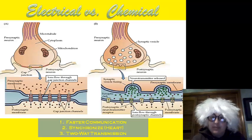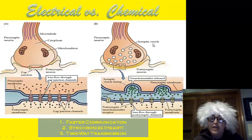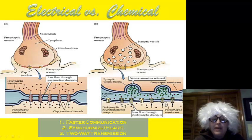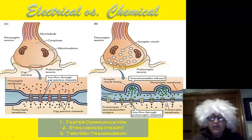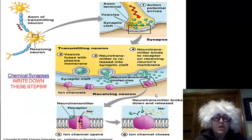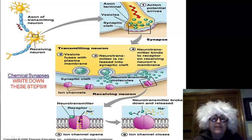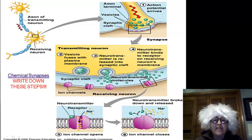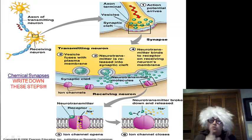We also have chemical synapses. Chemical synapses are when we have synaptic vesicles that have neurotransmitters. They move through exocytosis and then they are picked up by the next cell or nerve through specific receptors. Looking at a chemical synapse: number one, the action potential arrives. Number two, the vesicles fuse with the plasma membrane. The neurotransmitters are released into the synaptic cleft, which is in between the two cells.